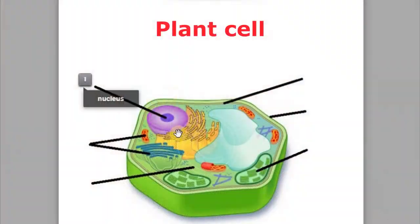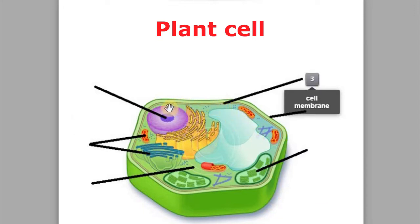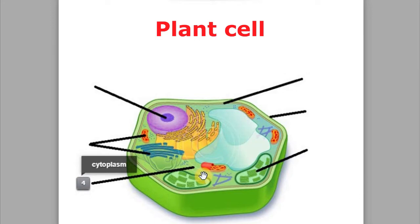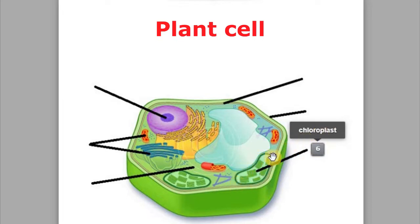Animal cells are a bit different from plant cells, but they also have some similarities. Plant cells also have a nucleus, which has the same function, and there are several organelles — some of them are similar, others are different. They also have a cell membrane and a cytoplasm. But apart from that, there is a cell wall which surrounds the membrane and makes the plant cell more rigid and resistant. And they also have chloroplasts, which are specialized organelles used for the photosynthesis of plants. That's why there are chloroplasts in plants but not in animal cells.